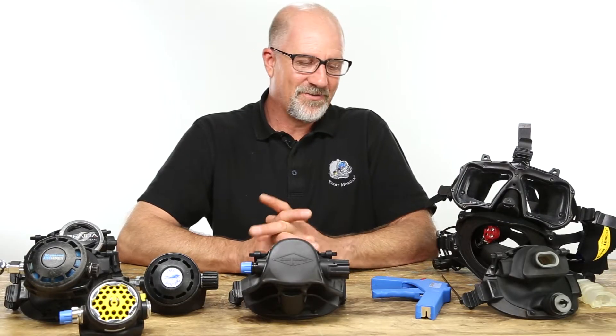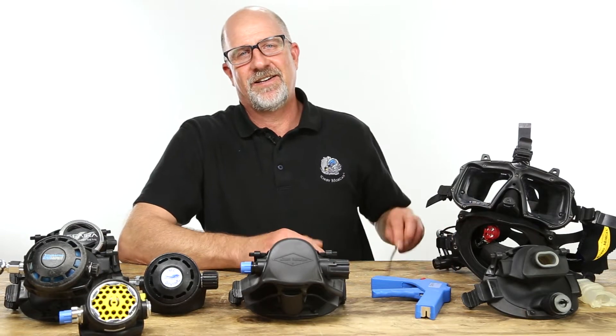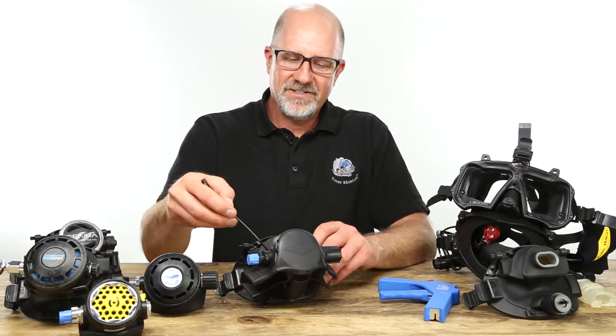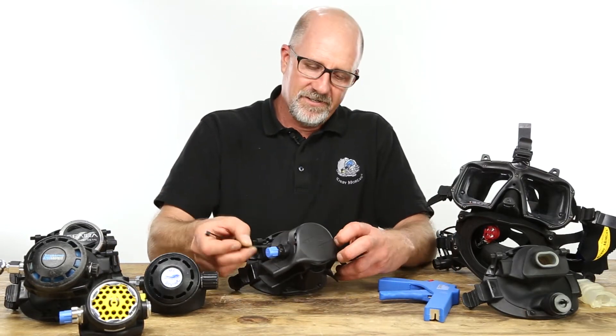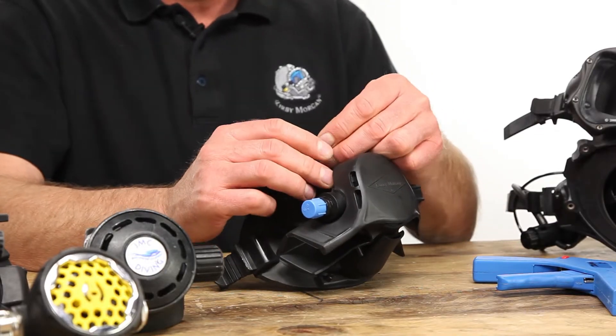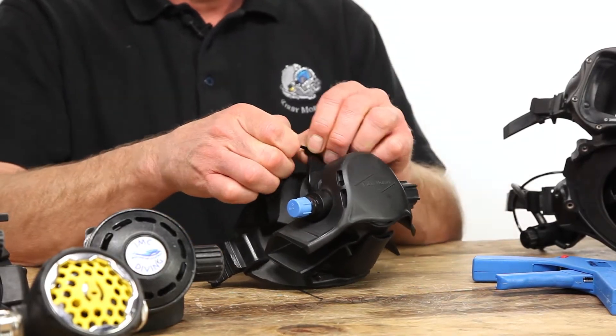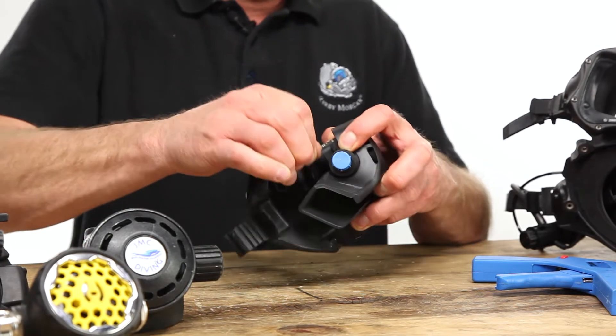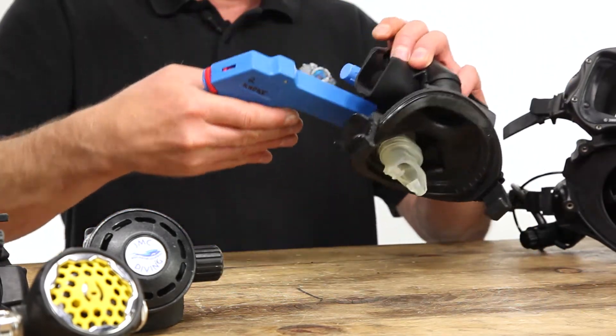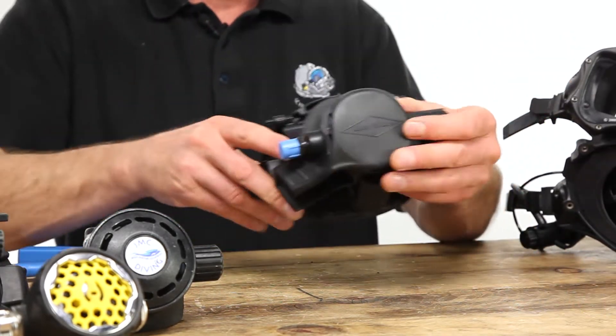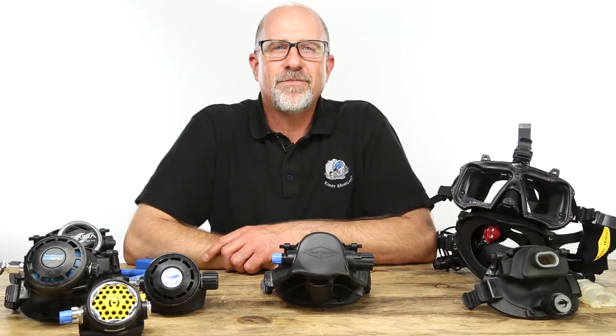Now you're ready to secure the regulator with a zip tie. Make sure the zip tie is rated for 50 pounds or 23 kilos. Put it around the edge of the pod cover, terminate, and now you're ready for a pull test.